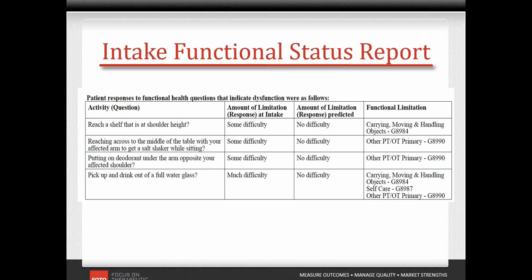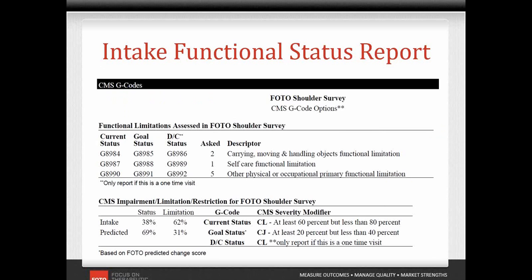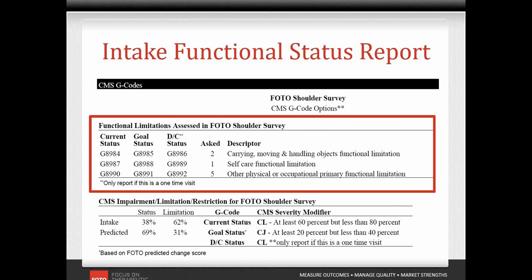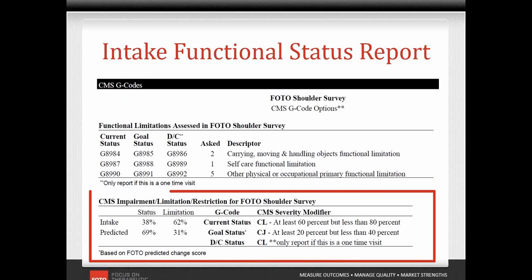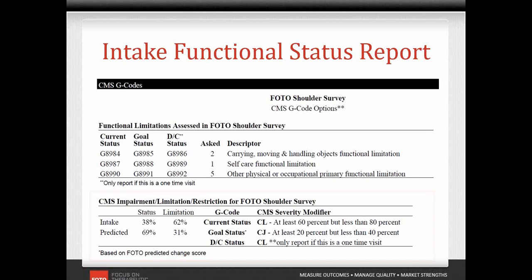This helps the clinician understand the patient's limitations and ties them to Medicare's functional limitation reporting G codes. There is also a detailed functional limitation reporting section. The potential G codes that the clinician might choose to report are provided here, and the suggested severity modifier for the patient's current and goal status are also provided.